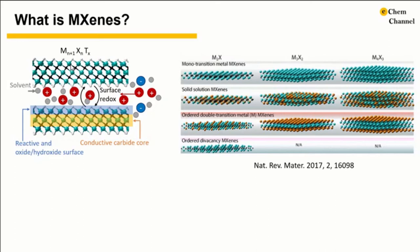So the general formula of MXene is M(N+1)XN TX, where M represents the transition metals, X is carbon or nitrogen, and TX is the surface groups. The first MXene, Ti3C2TX or titanium carbide, was discovered at Drexel University in 2011. Besides the M3X2 structure, there are also 2-1, 4-3, and 5-4 structures.